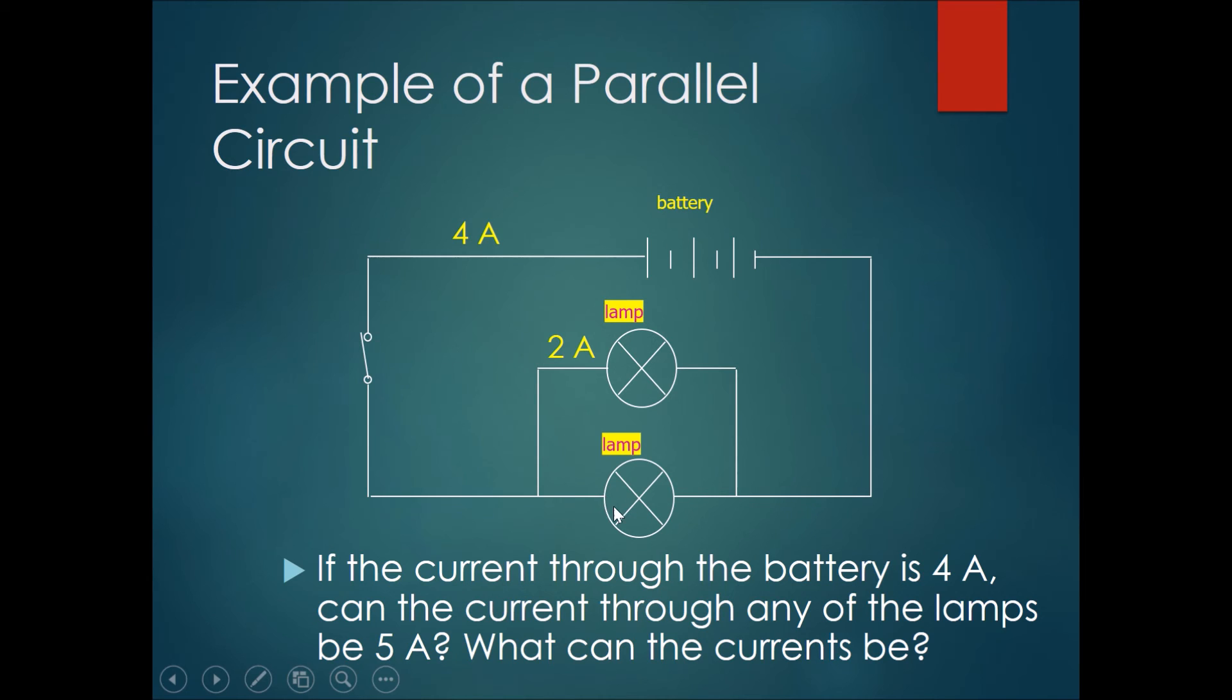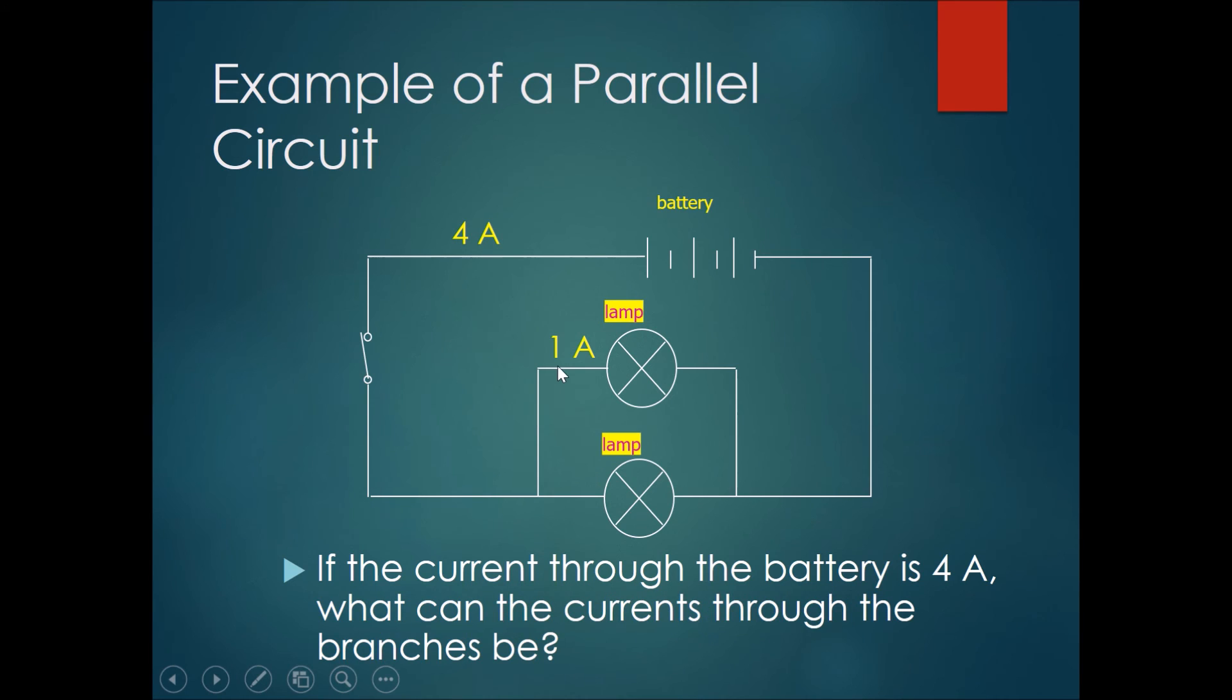you would have to say it was two amperes because the currents through these two branches added together would be the current going through the main line. Similarly, if we say that the current going through this branch was one ampere, then the current going through the bottom branch would be three amperes.